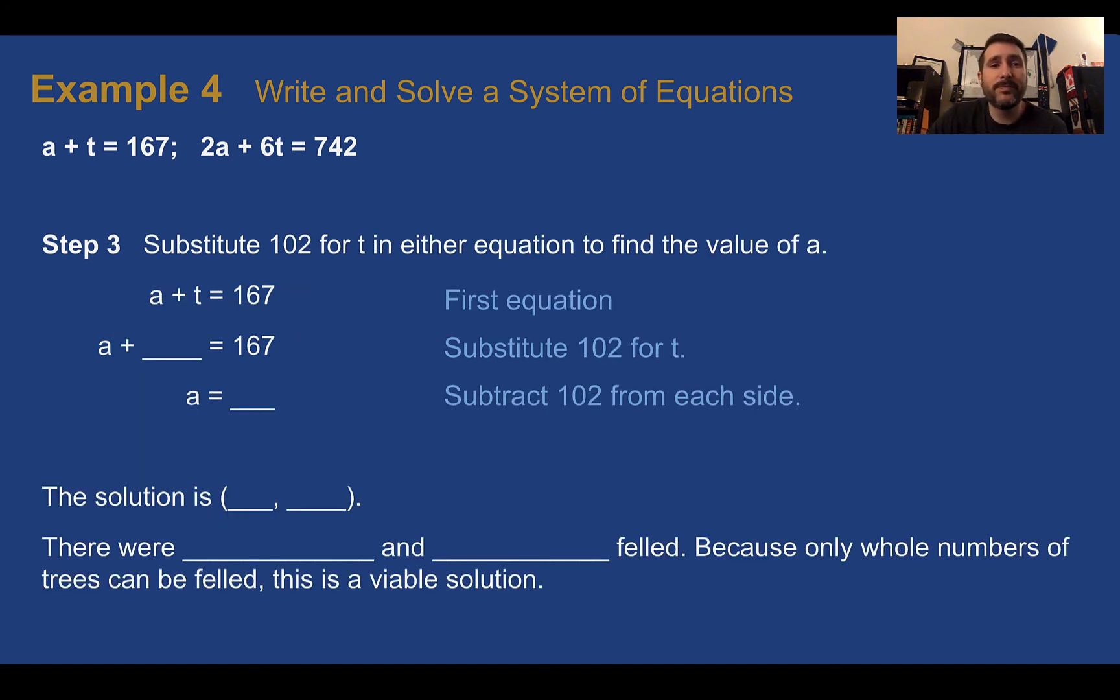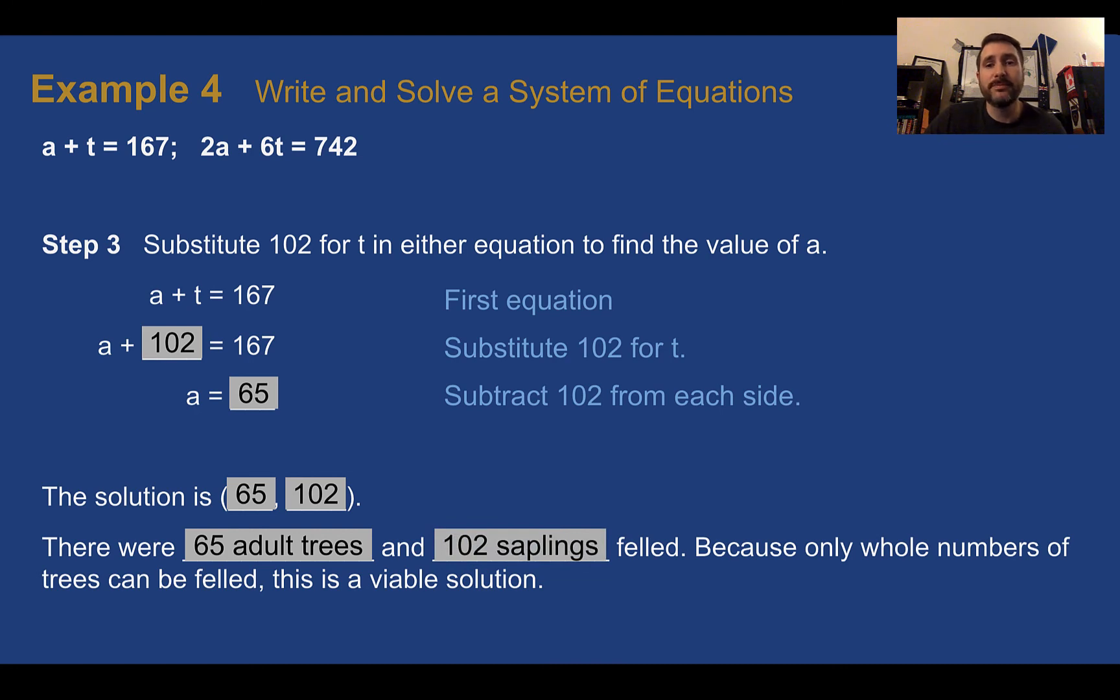Finally, we know that T is 102, so plug that back in. The first equation is the easiest. A plus 102 is 167, so if we subtract that 102 from both sides, A must be equal to 65. So our solution here, A is going to be like X, T is going to be like Y, since that's the order we put them in the equations. So 65 would be A, 102 T. What this means back in the context, there were 65 adult trees and 102 sapling trees that were felled. And this makes sense because they're not going to chop down parts of trees, so it makes sense that we have whole numbers. If we had got a decimal answer, then we might have to question if we did something correctly.